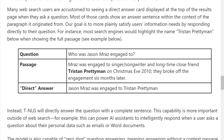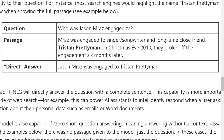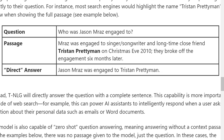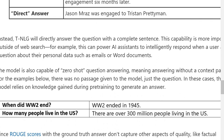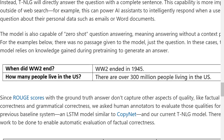It can also do question answering. You give it a question and a passage about that question, and it will tell you the answer it deduced from the passage. What's more interesting is that a usual QA system will point to the passage — pointing to words like 'Tristan Prettyman.' Whereas with a generative model like this one, you can make it actually output an answer as a sentence, generating text like 'Jason Mraz was engaged to Tristan Prettyman.'